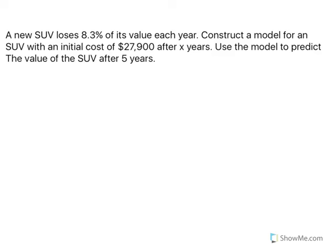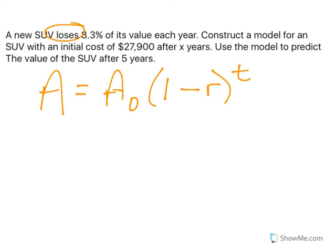In this case, we're talking about losing value. When we think about our formula A equals A₀, 1 minus the rate - we're going to subtract the rate because we're losing value. The 1 represents what we started with. So we have an initial cost of $27,900.